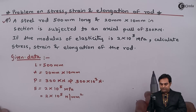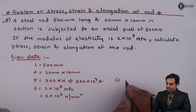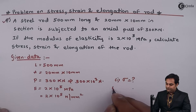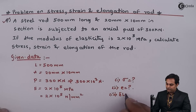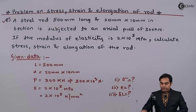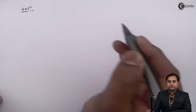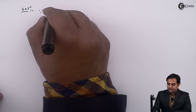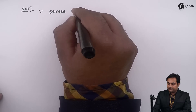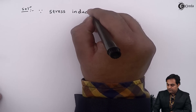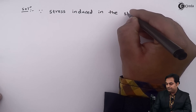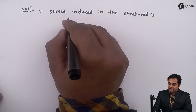We have to calculate three things: first, the stress induced in the rod; second, the strain; and third, the elongation of the rod, which is Delta L. Let us find the solution for this problem.